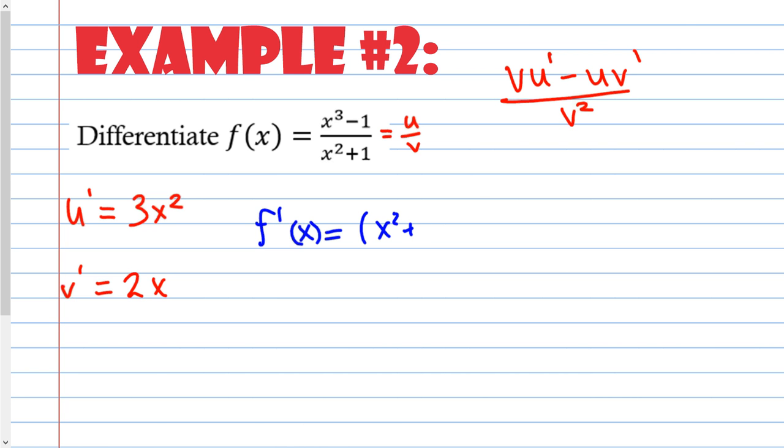So I'm going to write it down. So low d high minus high d low over low times low, which is squared. So v, x squared plus 1 times u prime, which is 3x squared, minus u. U is x cubed minus 1 times v prime, which is 2x over, and a lot of people forget this part, low times low, so v squared. So x squared plus 1, and then I square that. Again, perfectly fine answer. The only thing left to do is to simplify somewhat, but I'm going to skip to simplifying. Sometimes they even tell you what to plug in, so you don't have to simplify. But you should know how to do it, so I feel like I shouldn't have to keep going over it.